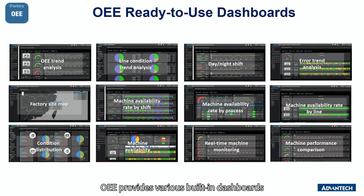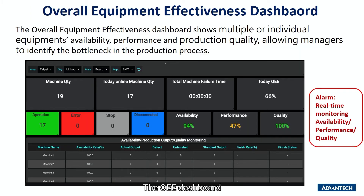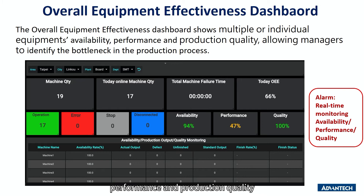OEE provides various built-in dashboards. Once the data has been configured, users can directly use the dashboard to monitor the trends and abnormal conditions of machine performance. The OEE dashboard shows multiple or individual equipment availability, performance, and production quality, allowing managers to identify any bottleneck in the production process.